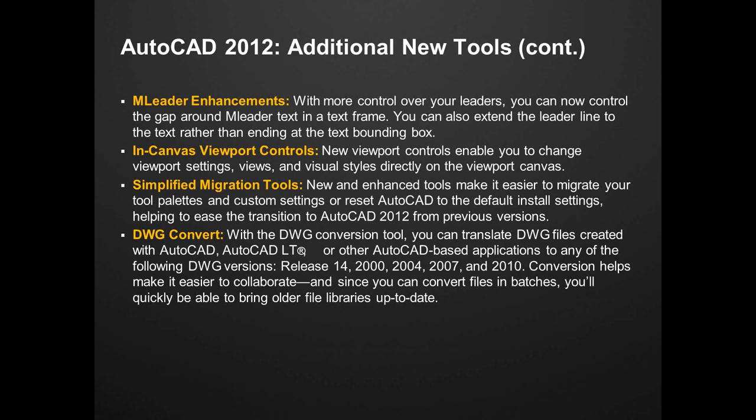Easier migration tools: if you're coming from previous versions of AutoCAD, sometimes that migration's a little rough. But in 2012 it has more enhanced tools to migrate your palettes, migrate your settings, and install those different settings from past versions — so it makes that headache a lot easier. The DWG Convert tool allows you to translate DWG files created with AutoCAD or LT from any past versions, so you can go back and forth between versions. If you work with someone on AutoCAD 2009 and complete a project in 2012, you can convert that even in batch mode, converting multiple files at once, making collaboration a lot easier.